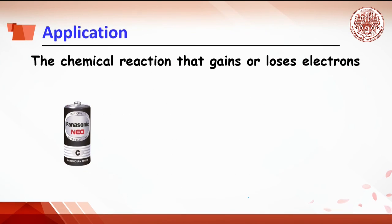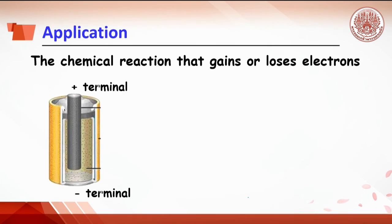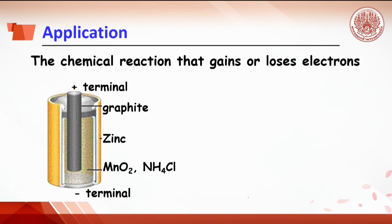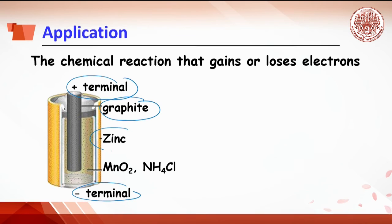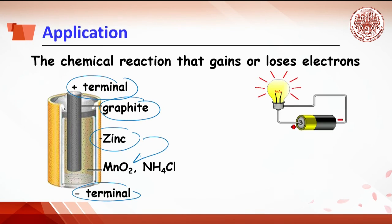A dry battery is an example of an electrochemical cell. In the battery, there are chemicals and electrodes. The plus terminal or cathode terminal is made from graphite and the minus terminal is made from zinc. After connection, the reaction between zinc and manganese dioxide takes place causing electron flow.